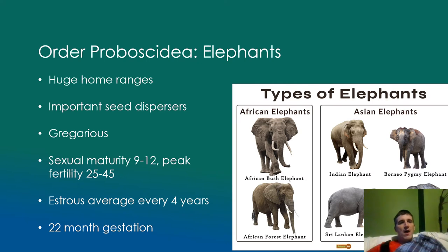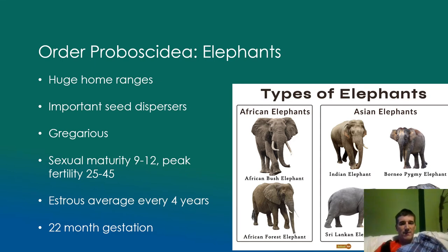Elephants are huge animals — the African elephant is the largest terrestrial animal. To support that size, they need to have huge home ranges, and both African and Asian elephants have really large home ranges for mammals. They're also ecologically important for a variety of reasons, most notably as seed dispersers. They eat a lot of vegetation, move long distances, and deposit seeds all over the place in their waste. Think about island biogeography — these animals can move across large patches of habitat, moving plant species through seeds, which is especially important in Africa across large inhospitable areas.